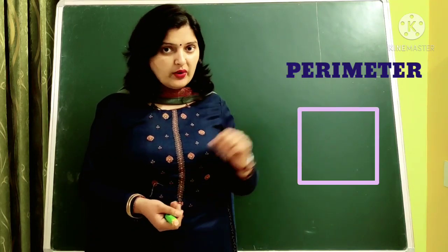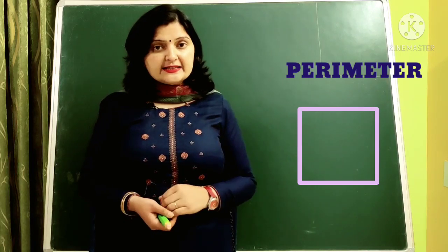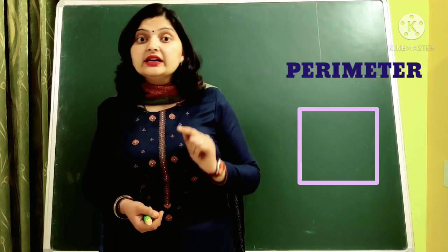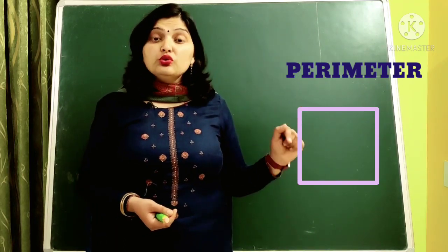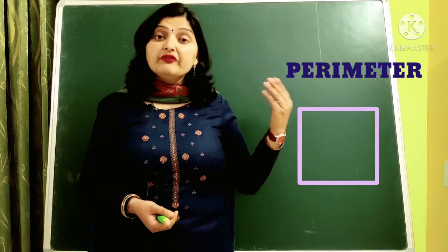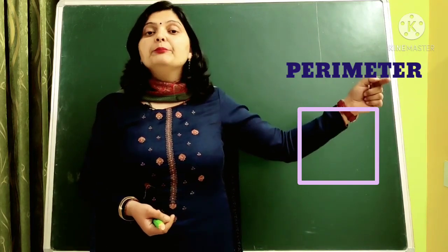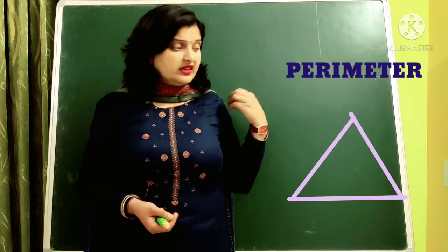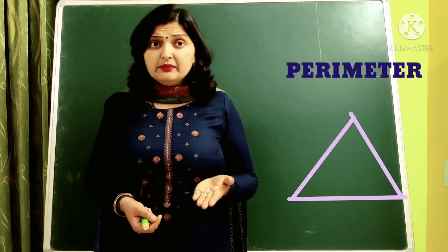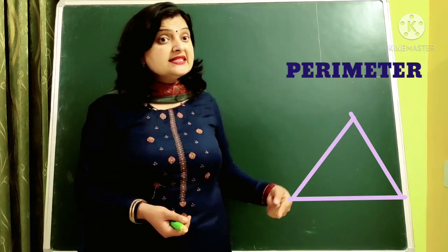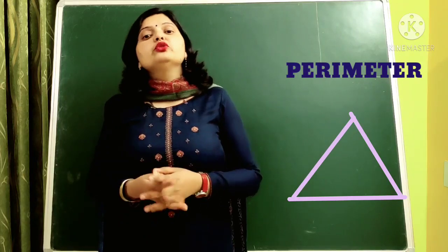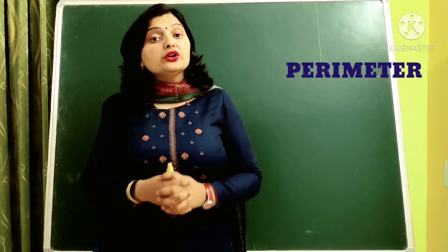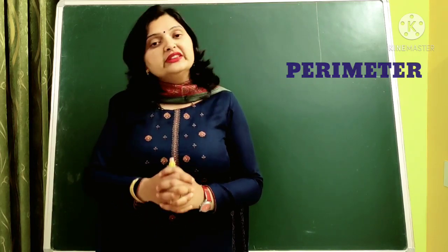Suppose this is a square and you want to find its perimeter. Since perimeter means the boundary of a figure, if it is a square, you have to measure the boundary of this complete square. It may be any other figure — it may be a triangle. If you have a triangle and you have to calculate its perimeter, it means you have to measure its boundary. So whenever you have to find the perimeter of a figure, you have to measure the boundary of that figure.